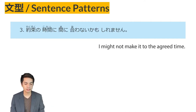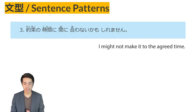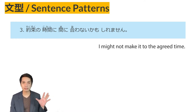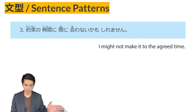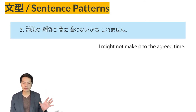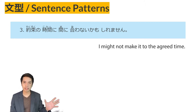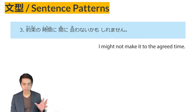Sentence pattern number three: yakusoku no jikan ni maniawanai kamoshirimasen. The pattern is verb-nai kamoshirimasen. From the verb maniaimas, meaning 'to make it in time,' maniawanai is its nai-form, plus kamoshirimasen, meaning 'maybe.' So this translates as 'Maybe I will not make it to the agreed time.' Kamoshirimasen expresses a guess or uncertainty.